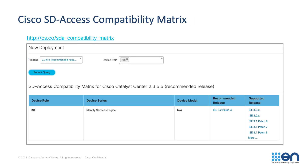Before you start your SD-Access deployment, please review the compatibility matrix. The URL is on screen and will be in the notes below the video. The compatibility matrix recommends a Catalyst Center version, ISE version, and patch level for SD-Access. Please note the matrix does update from time to time, so it's worth checking the live online version rather than referring to a screenshot.